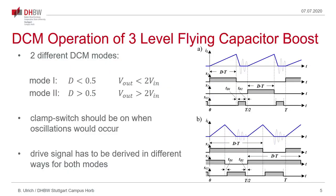To operate the three-level flying capacitor boost converter with a clamp switch we have to consider that there exist two different discontinuous conduction modes. Mode 1 if the duty cycle is less than 50% and mode 2 if the duty cycle is more than 50%. In both cases we have different input output voltage ratios.